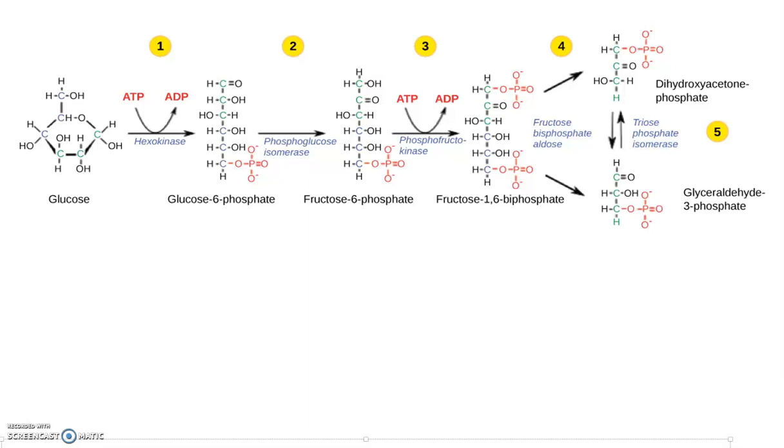Okay, so moving forward in our discussion of cellular respiration, we're going to talk in detail about the first process that's called glycolysis. Glycolysis occurs in the cytoplasm of the cell.